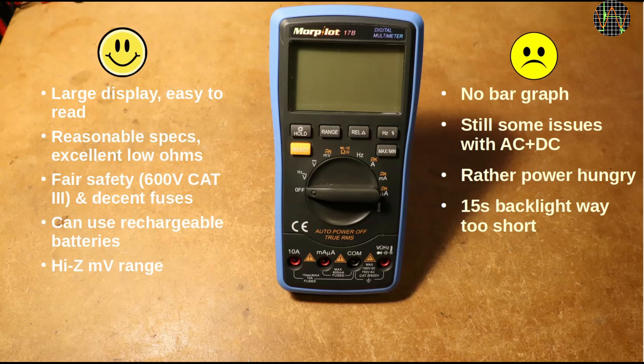On the plus side, it has a really large display which makes it very easy to read even from a distance. The specs are okay and it really excels at low ohms measurements. Safety and fuses are better than expected. The CAT-IV 600V rating is probably justified, but with just one PTC, protection of the meter's electronics is not great.